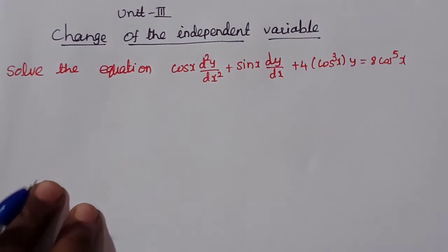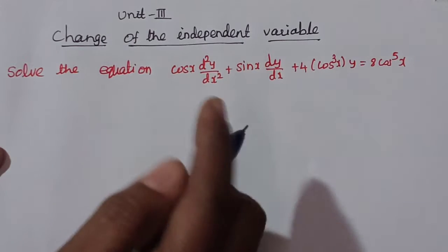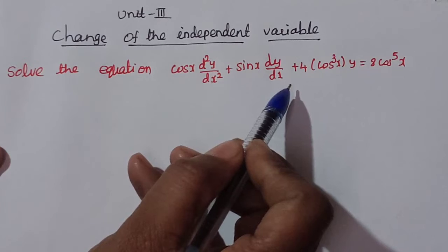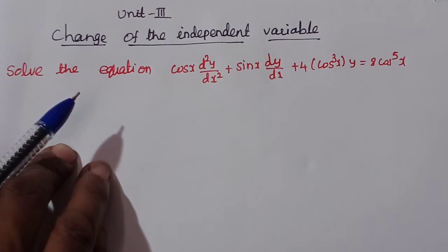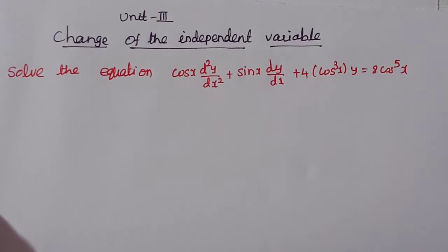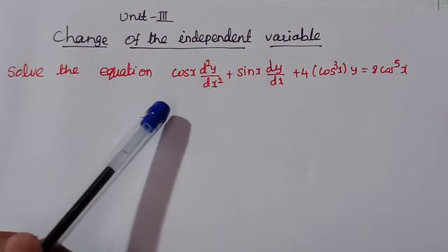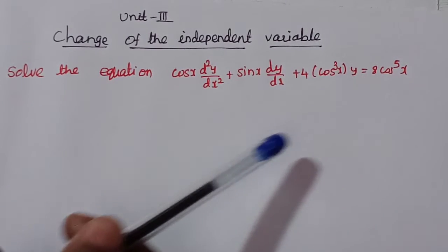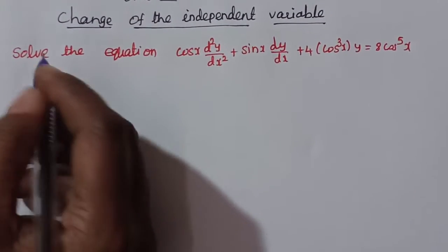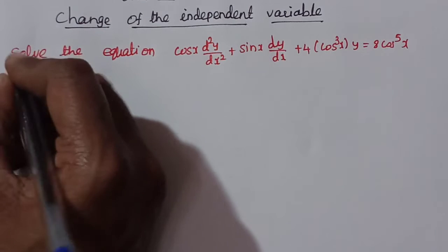In this equation, y is the dependent variable and x is the independent variable. We will change the independent variable to convert the variable coefficients — cos x and sin x — into constant coefficients. By changing the variable, we change the form of the complementary function and the equation itself.